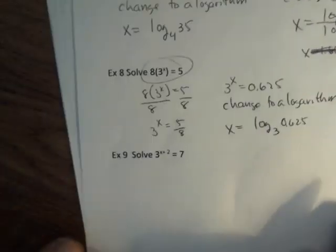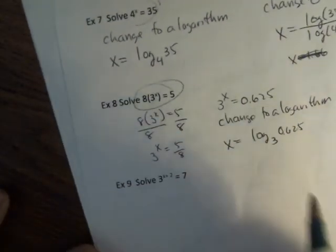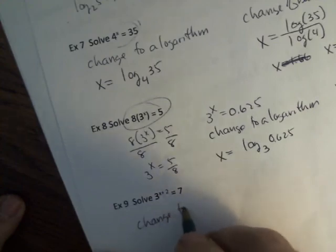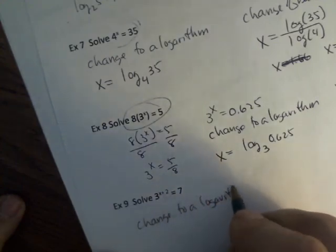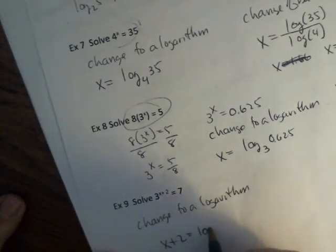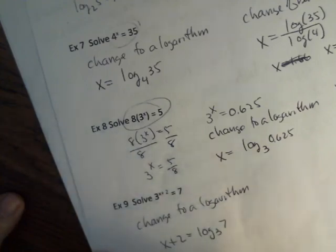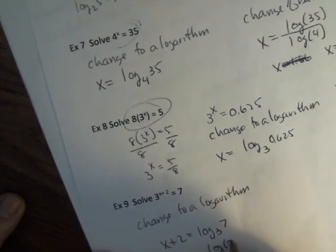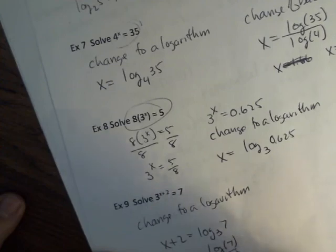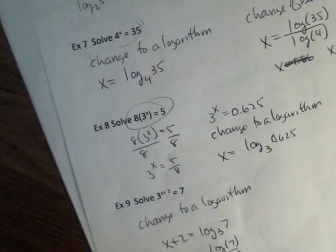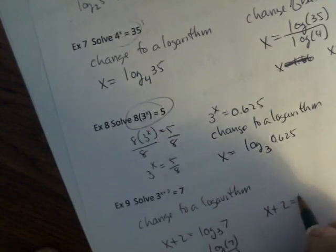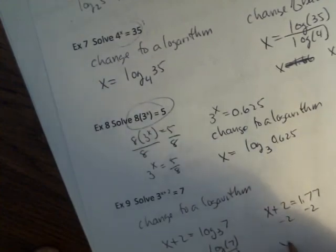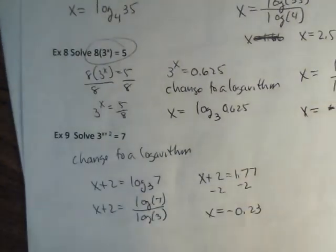All right. Last. The only difference in this last one is we have an expression in the exponent. Our base and exponent are isolated. So, from here, I can change to a logarithm. So, x plus 2 is log base 3 of 7. So, x plus 2 is log 7 divided by log 3. And I get 1.77. Subtract 2. So, x is negative 0.23.